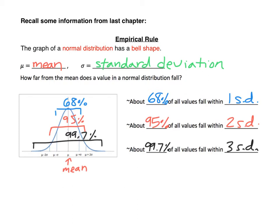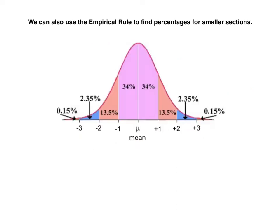The empirical rule tells us: 68% of values are within 1 standard deviation, 95% are within 2 standard deviations, and 99.7% are within 3 standard deviations of the mean. We can use those percentages to break up the curve into smaller sections — make sure you get these filled in in your notes.